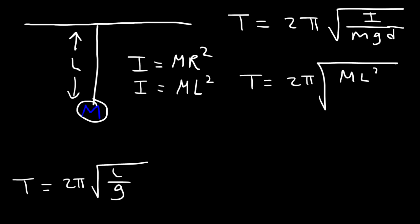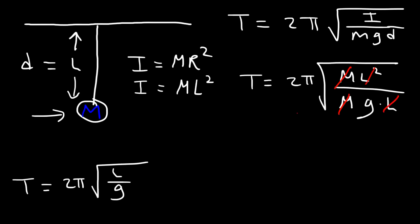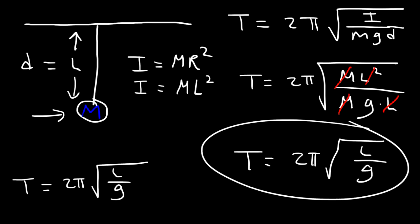The center of mass is located at that point mass, since the string has no mass, so d equals L. Substituting into the physical pendulum formula: we have m in the numerator (mL²) and mgd = mgL in the denominator. We can cancel m and cancel one factor of L, leaving 2π times the square root of L over g — which is exactly the simple pendulum formula.